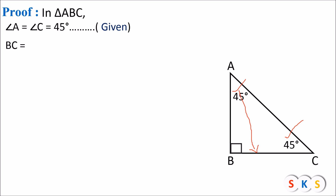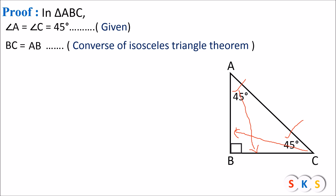BC is the side opposite to angle A, and AB is the side opposite to angle C. Therefore BC equals AB, according to the converse of the isosceles triangle theorem. We will consider this as equation number 1.